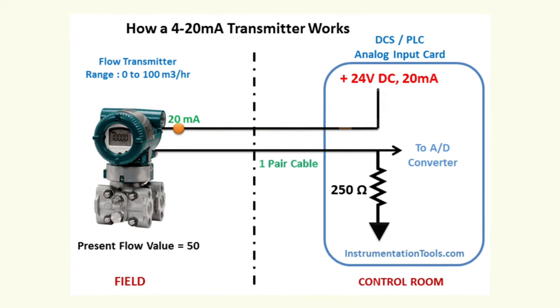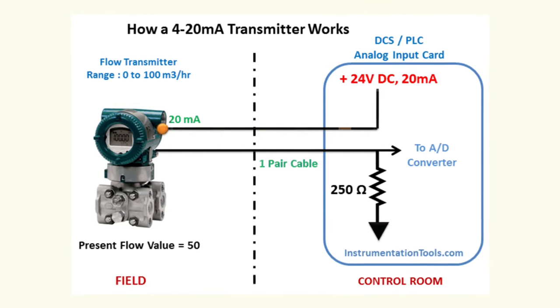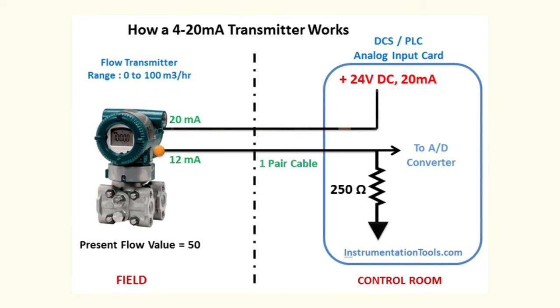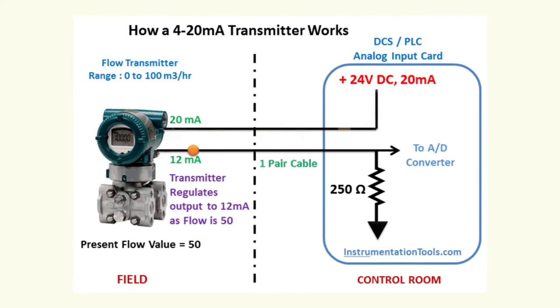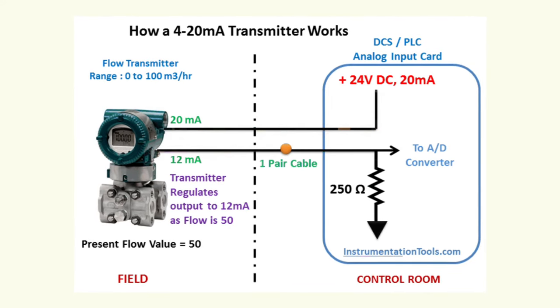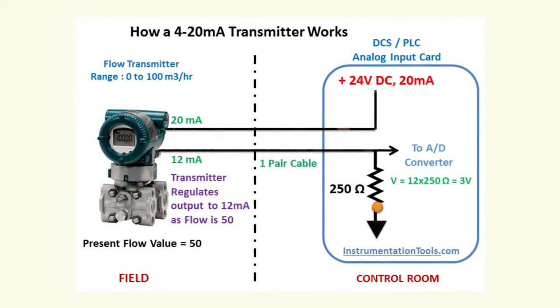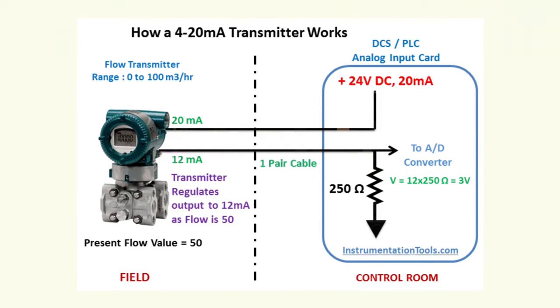The standard loop current is usually 4 to 20 milliampere. Important calibration parameters with a current loop are zero, full scale, and span.